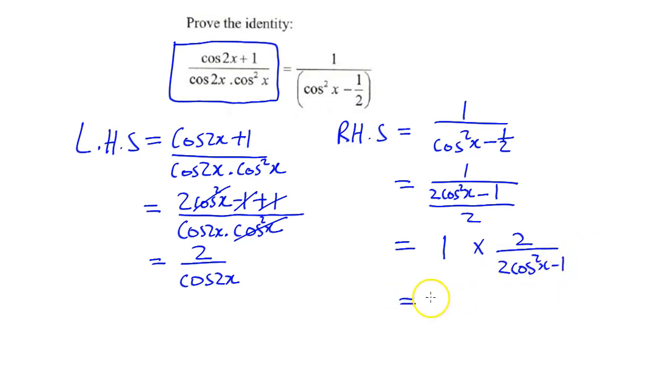I could have simplified earlier but I want to show you something. 2 cos squared x minus 1 is cos 2x, so this equals 2 over cos 2x.